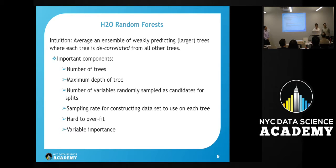We chose several algorithms. We started with random forests, essentially averaging an ensemble of weakly predicting trees. Tuning parameters we looked at were the number of trees, maximum depth of trees, and number of variables randomly sampled as candidates for splits. Reasons we chose random forests: it's very difficult to overfit, and you can get variable importance.